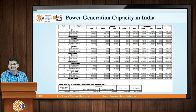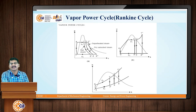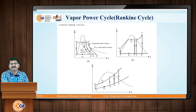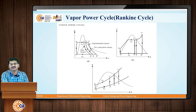We are generating steam which goes to the turbine. This is the basic vapor power cycle — the Rankine cycle — in which there are four major components: the turbine, boiler, condenser and pump. These are the four major components used in the steam turbine power plant.